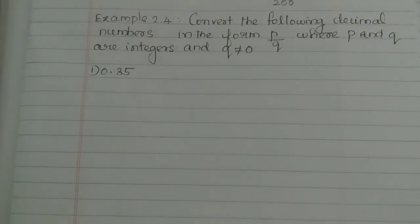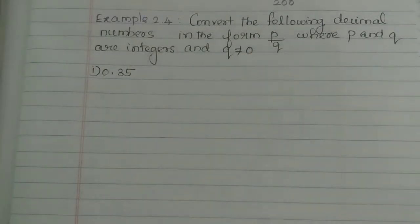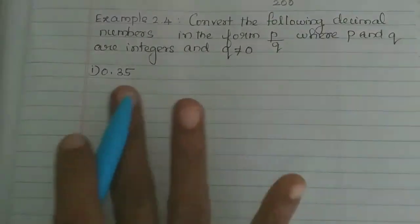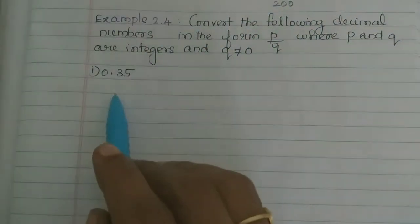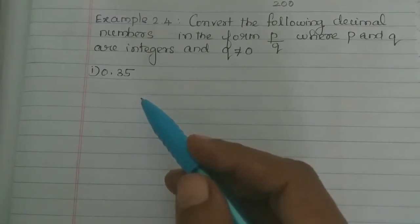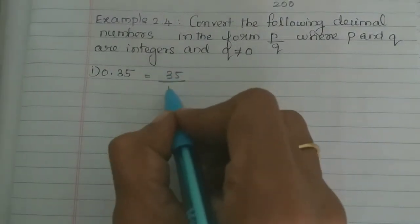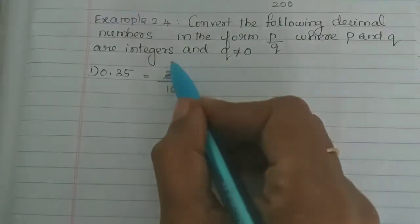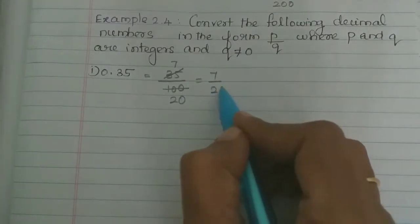Next, Exercise 2.4: Convert the following decimal numbers in the form p by q, where p and q are integers and q is not equal to 0. The first subdivision is 0.35. This is 3 by 10 plus 5 by 100, which equals 35 by 100. Simplifying: 35 divided by 5 is 7, and 100 divided by 5 is 20. So 0.35 equals 7 by 20.